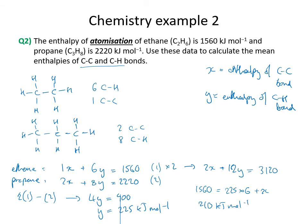So the CC bond enthalpy is x = 210 kJ/mol and the CH bond enthalpy is y = 225 kJ/mol. This was a slightly easier example to solve, but again the key difficulty was constructing the simultaneous equations from the chemistry problem in the first place — that's the skill you really need to work on.